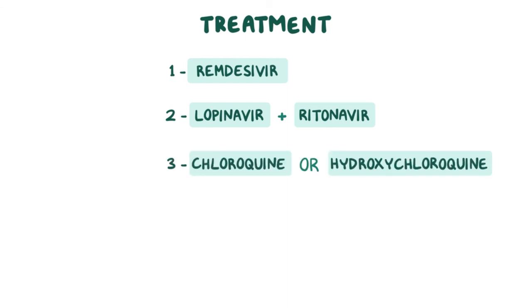There's early data showing that remdesivir, an antiviral drug previously used against Ebola, may be helpful. Other medications that have been used to try to treat severe COVID-19 include a combination of lopinavir and ritonavir, both of which are antiretroviral drugs, as well as chloroquine and hydroxychloroquine, which are usually used to treat malaria, with one trial showing effectiveness of hydroxychloroquine and azithromycin being used together. On March 22nd, the World Health Organization launched a global megatrial to test some of these promising medications.